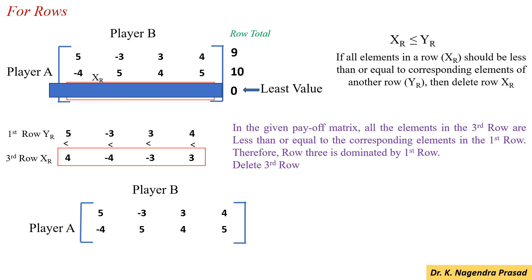Similarly, compare the second row with the first row. Here, minus 4 is less than 5, but 5 is not less than minus 3 — so 5 is greater than minus 3. So here, no row is dominated by another row.